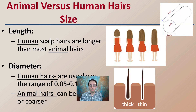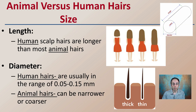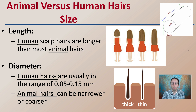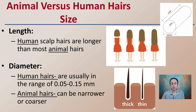Looking at animal versus human hair in terms of general size: for length, human scalp hairs tend to be longer than most animal hairs. Looking at diameter, human hairs are usually in the range of 0.05 to 0.15 millimeters, while animal hairs can be narrower and coarser. That quick comparison can help you initially start to classify it.